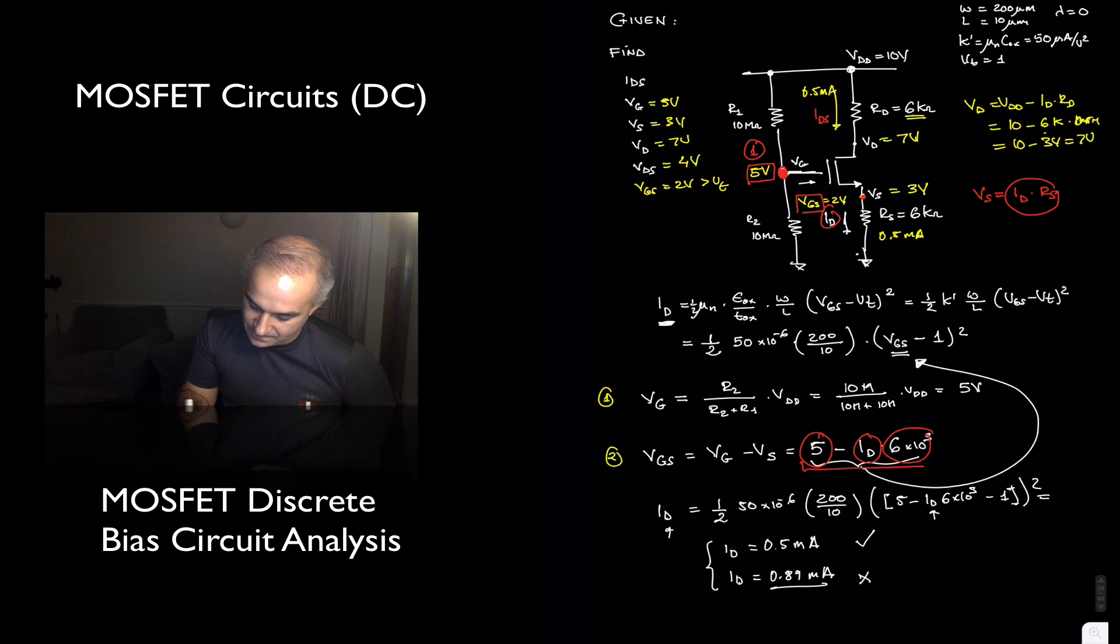With that, you are able to find the expression that we did here. Voltage at the gate minus the drain current times the resistance gives us this expression, which we can plug in into our equation for Vgs, and solve it, the quadratic equation, where we have two solutions.